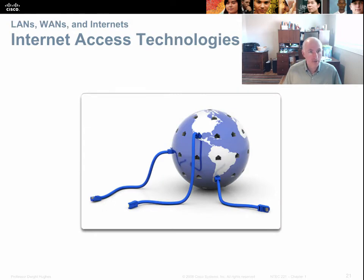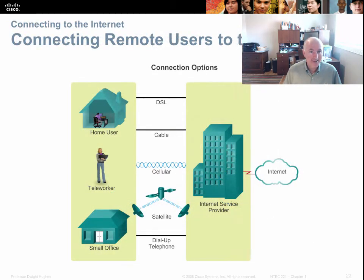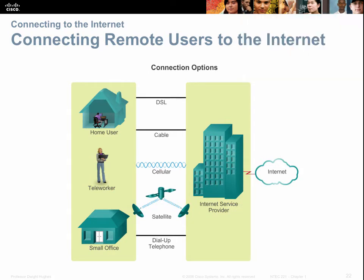There are many ways to access the internet today. DSL, cable, cellular, satellite, and the phone line are the predominant ways we find a connection, though there are many others.